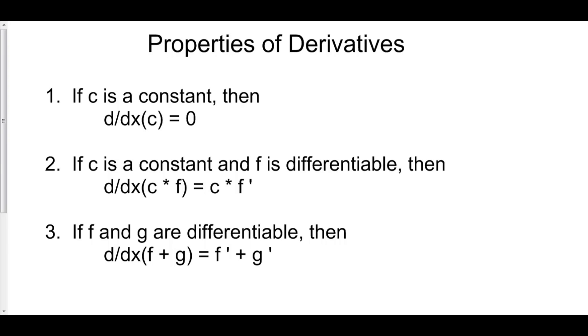There are three important properties of derivatives to discuss. Number one is that the derivative of any constant is just equal to zero.